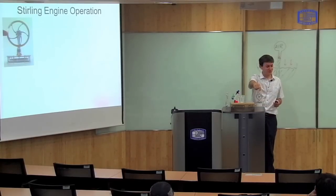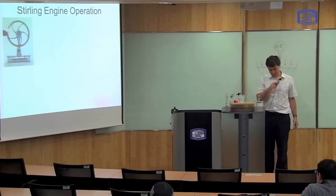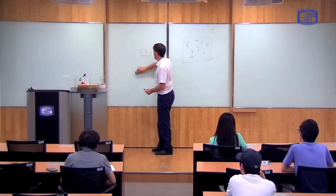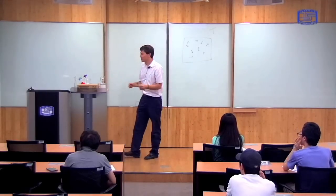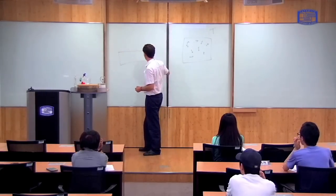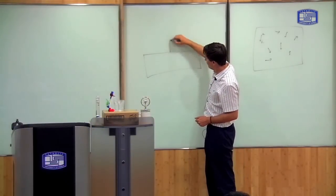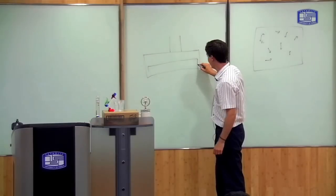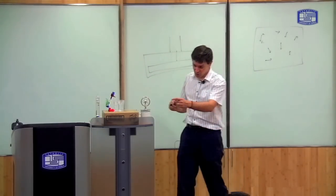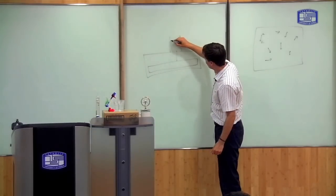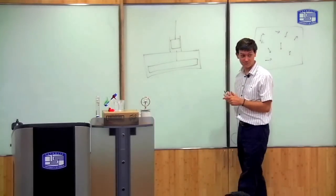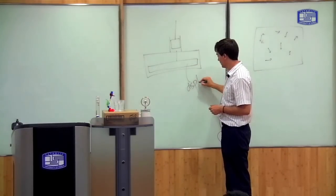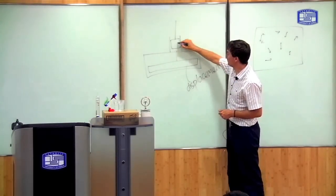I want to start by explaining the Stirling engine, which is probably the simplest one to understand. In a very simplified diagram, you've got a chamber filled with gas, and there are two pistons which go into the chamber. The first is a big one — the blue one — which covers virtually all of the area of the chamber. The second is a smaller black one. These go up and down. The big one is called the displacement piston, and the smaller one is called the drive piston.